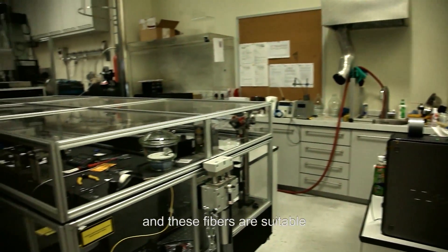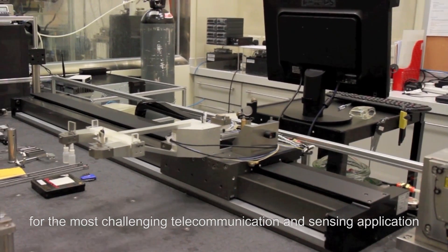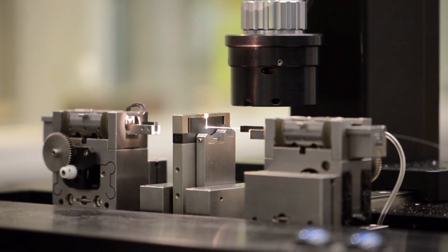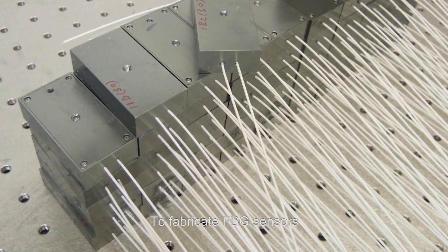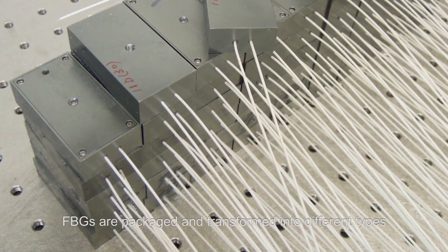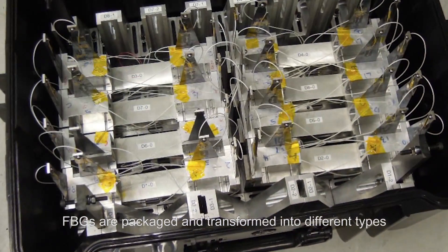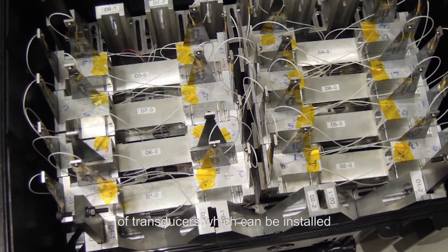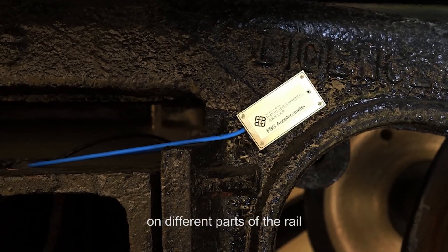To fabricate FBG sensors, FBGs are packaged and transformed into different types of transducers, which can be installed on different parts of the rail.